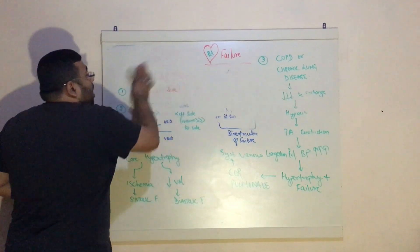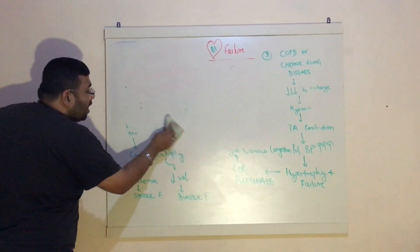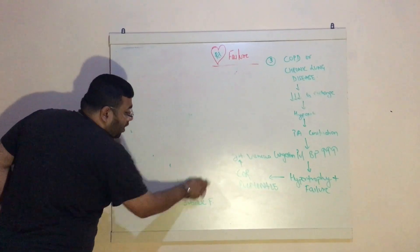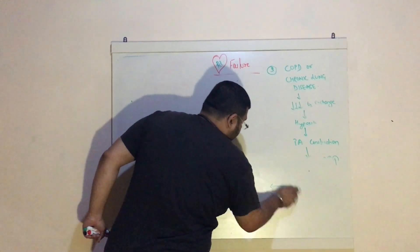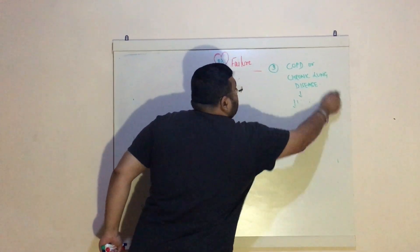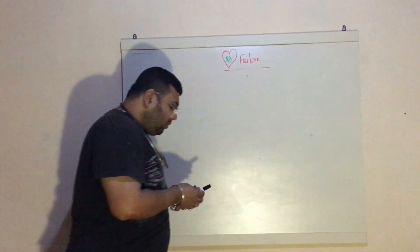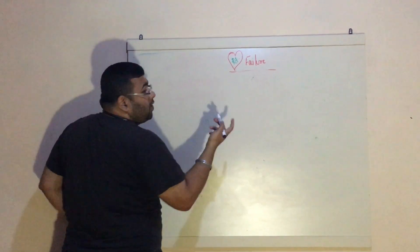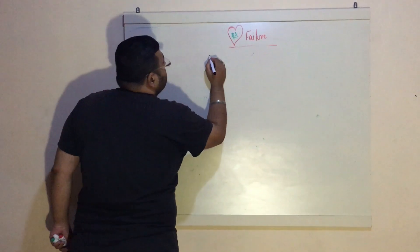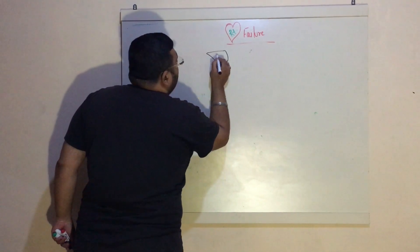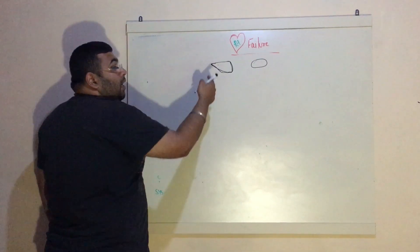Now we need to understand what systemic venous congestion is — it is very interesting. You need to understand this because if you don't, you won't understand the fancy terms used in textbooks of internal medicine. Systemic venous congestion is when fluid in large quantities gets into the interstitial spaces — especially of our liver and our spleen. The fluid starts to accumulate into our liver and spleen.